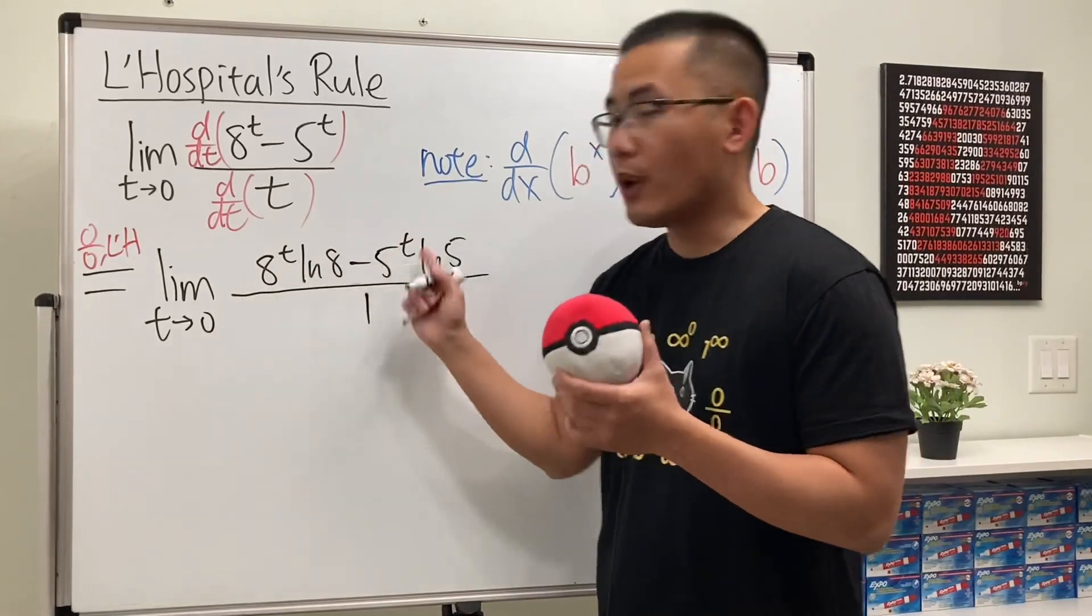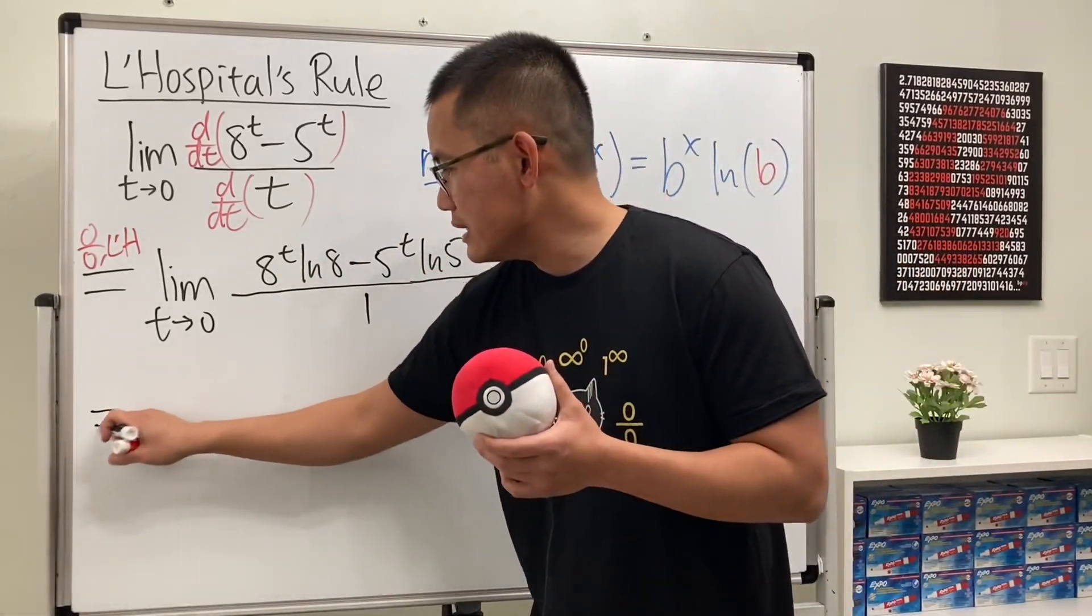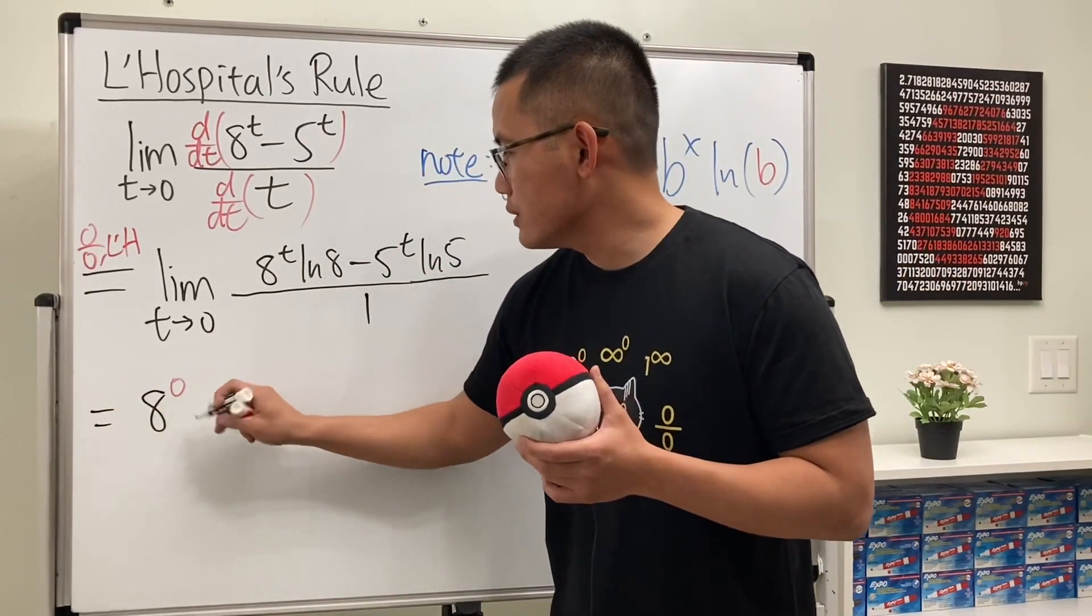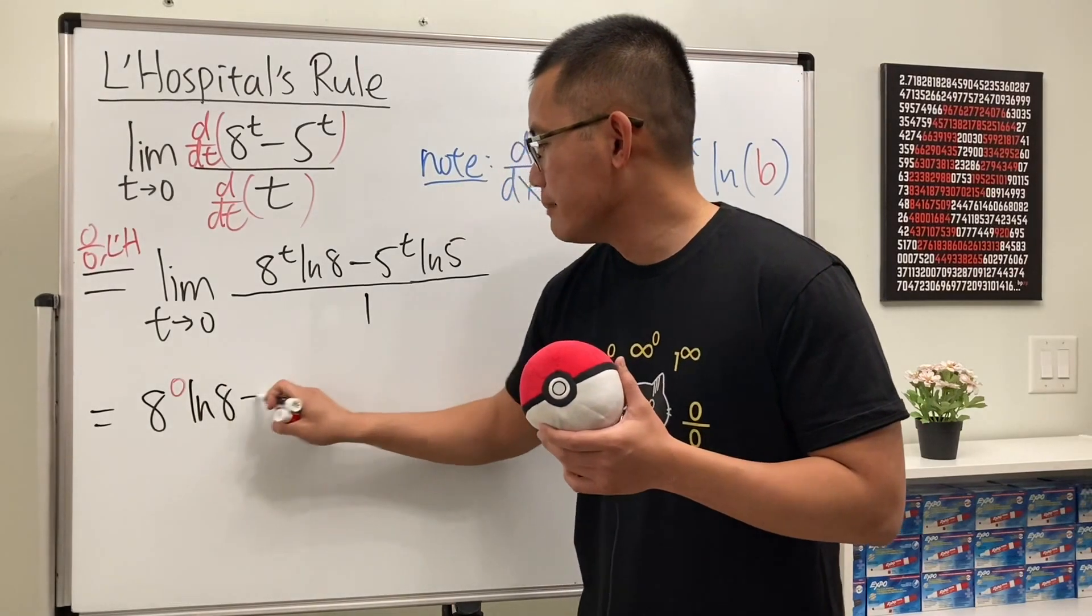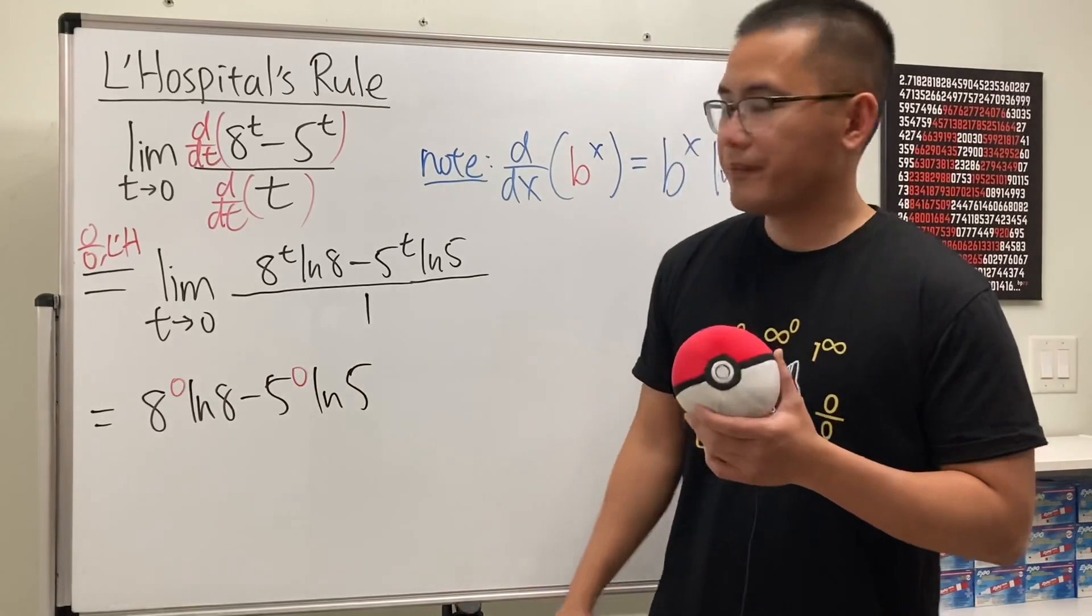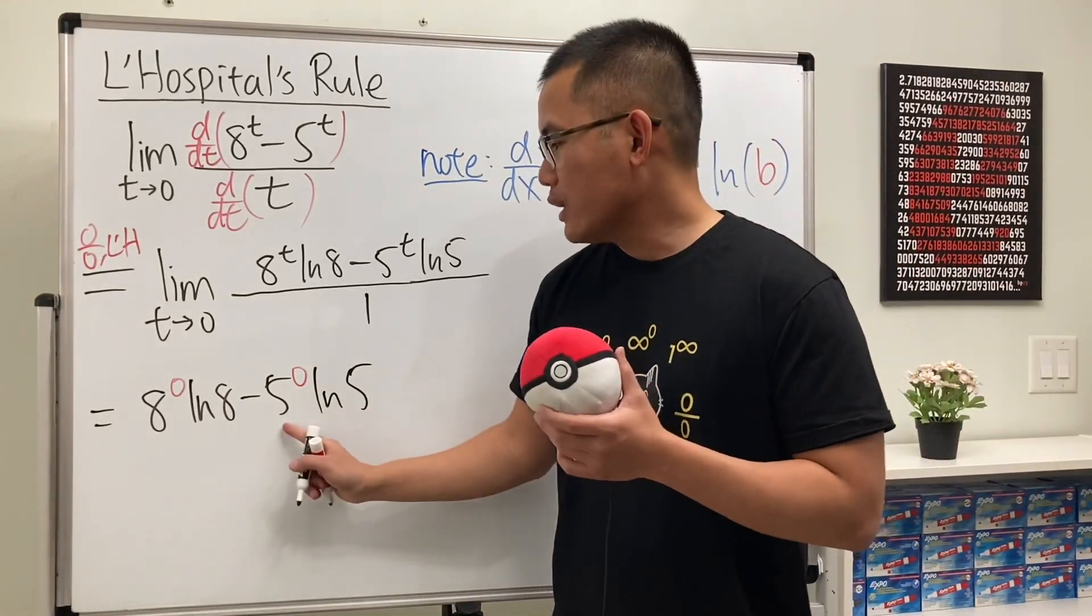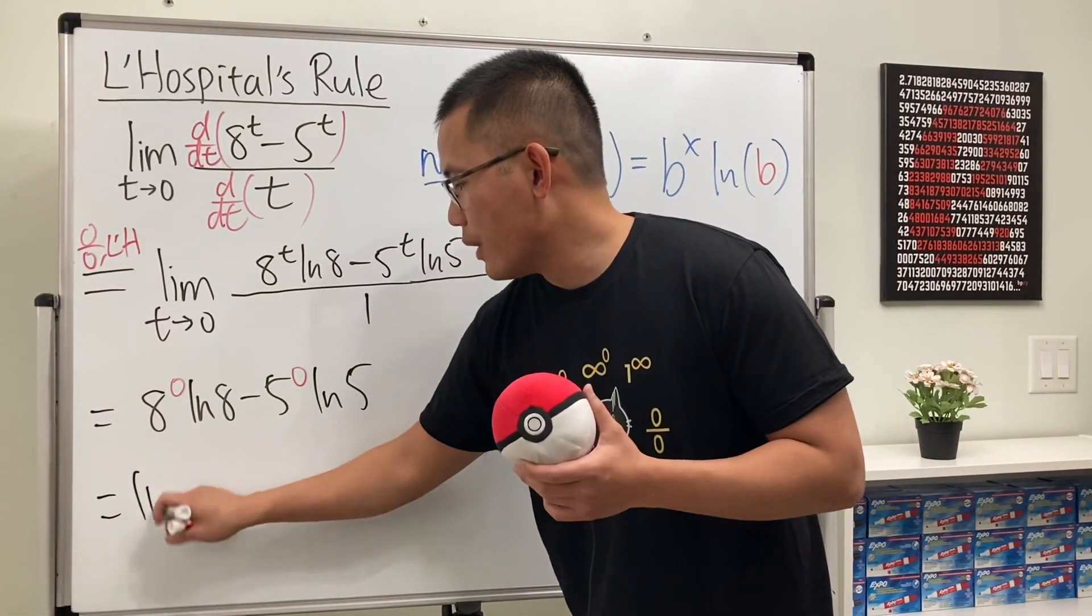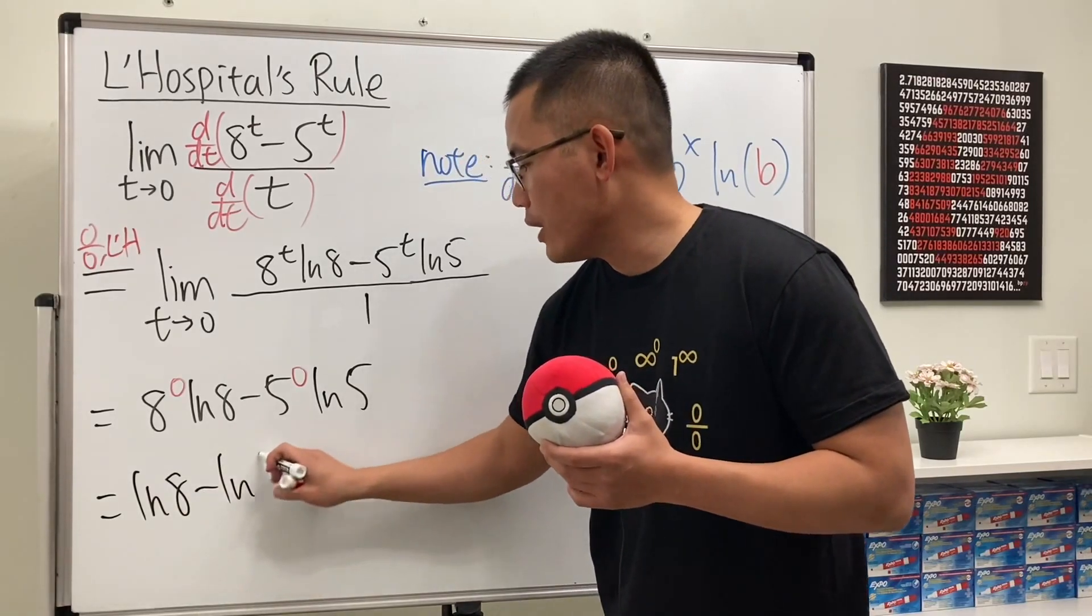And then we can just put 0 into all the t's. So we get 8^0 times ln8 minus 5^0 times ln5. This is just 1, likewise that. So we just have ln8 minus ln5.